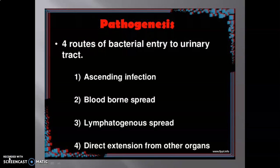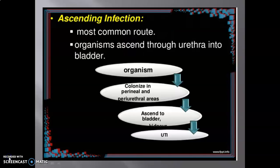In this slide we learn about pathogenesis, in which there are four routes of bacterial entry into the urinary tract. Number 1 is ascending infection — the most common route, where organisms ascend through the urethra into the bladder, colonizing the perineal and periurethral area before ascending to the bladder and kidney, causing UTI. Number 2 is blood-borne spread. Number 3 is lymphatogenous spread. Number 4 is direct extension from other organs.